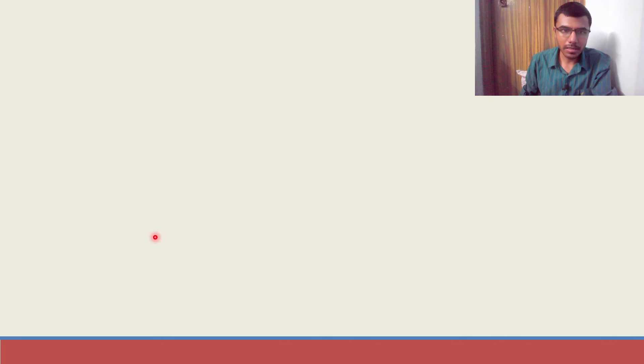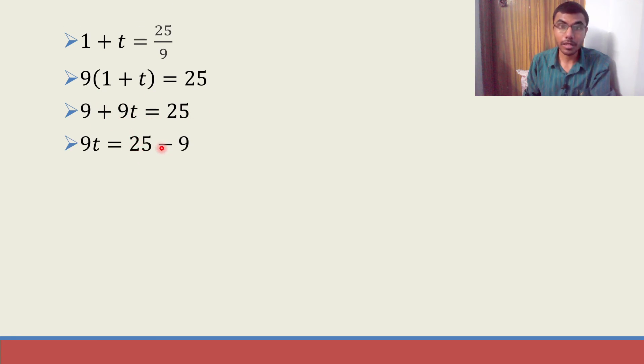Next, 1 + t is nothing but 25/9. 5 squared is 25 and 3 squared is 9. Now we are close to the ending. So 9 you can send it here. 9(1 + t) = 25. 9 + 9t = 25. Send the 9 here. 9t is nothing but 25 - 9 and 9t is 16. That's it.